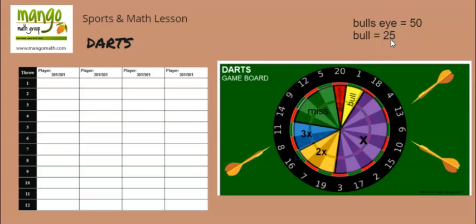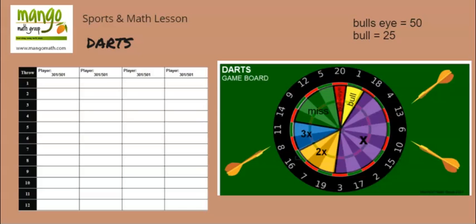For students to play this game, they're going to start from a set value. The game can be played two different ways — either starting at 301 or starting at 501. If you're going to start with 301, I suggest crossing out the 501 so you're not confused about your starting point.